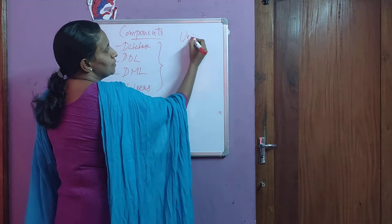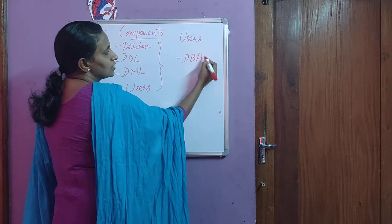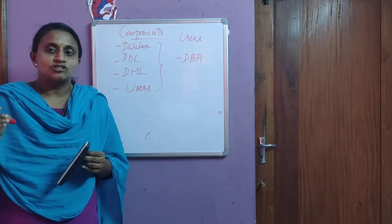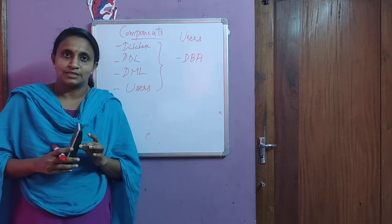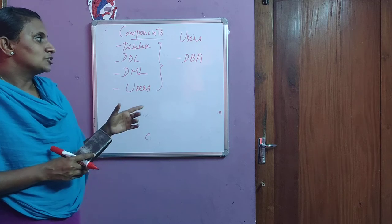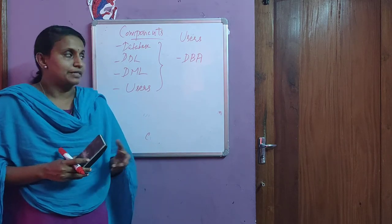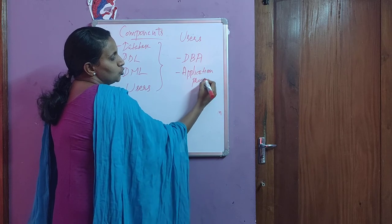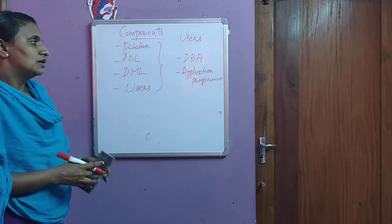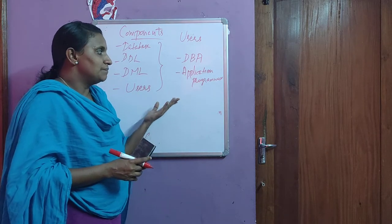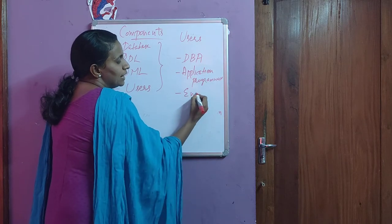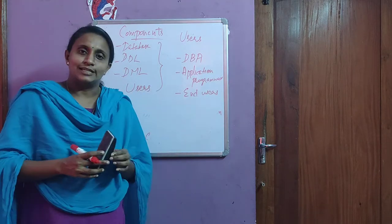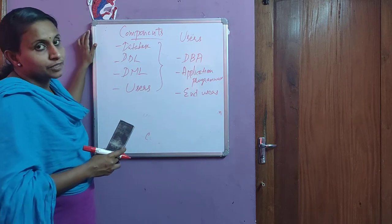Now we go into detail about the users of the database. The first type is the DBA, or database administrator, who has central control over the data and the programs that access data in the database. The second type is application programmers — users who write programs to interact with the DBMS. The third type is end users, like us, who use the database for a particular application.